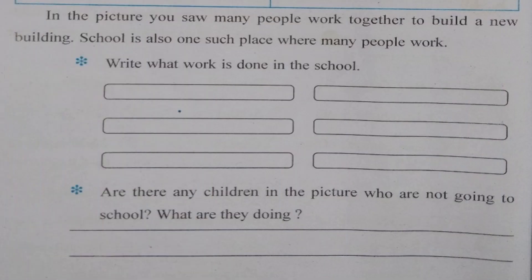Next: in the picture, you saw many people work together to build a new building. School is also one such place where many people work. Write what work is done in the school. In the school, children get education. Teachers teach children. All children pray in the morning. Children are made to do various activities such as studying, drawing, playing, dancing, and singing. The school molds every child to become a good citizen.